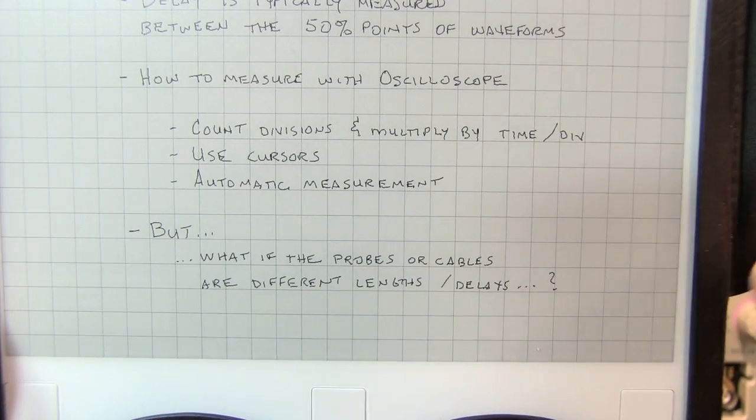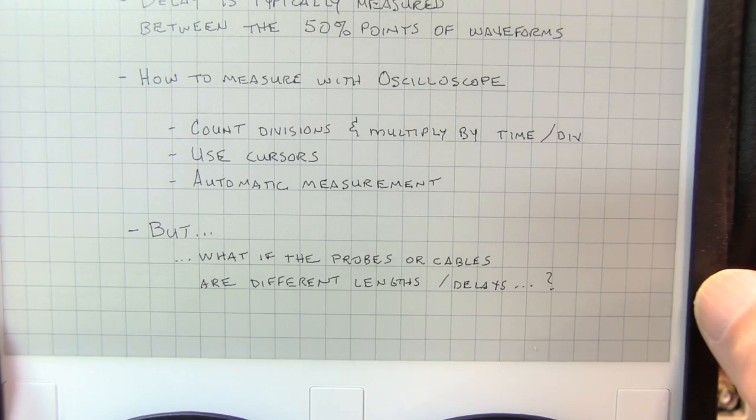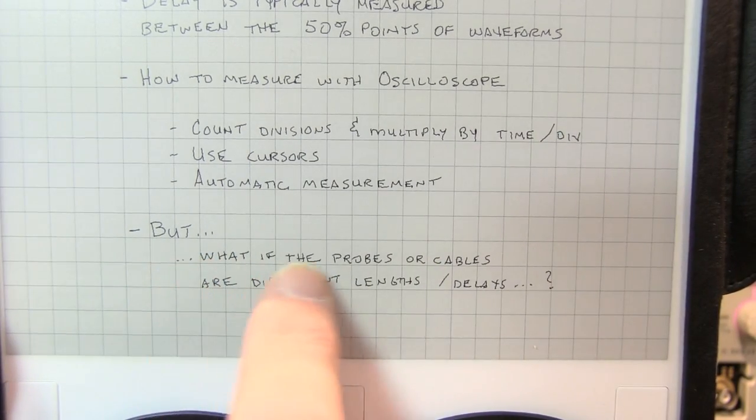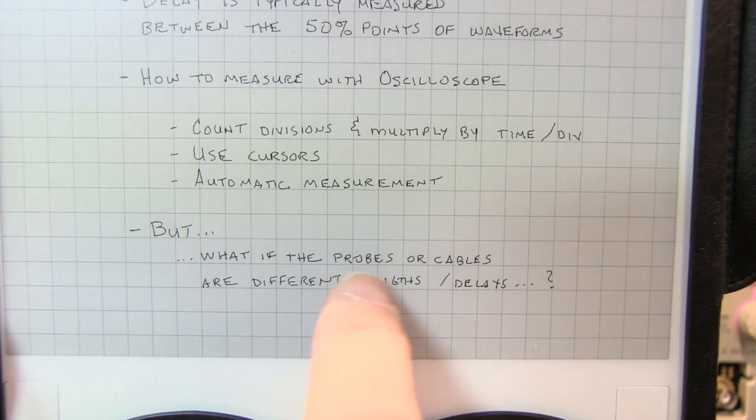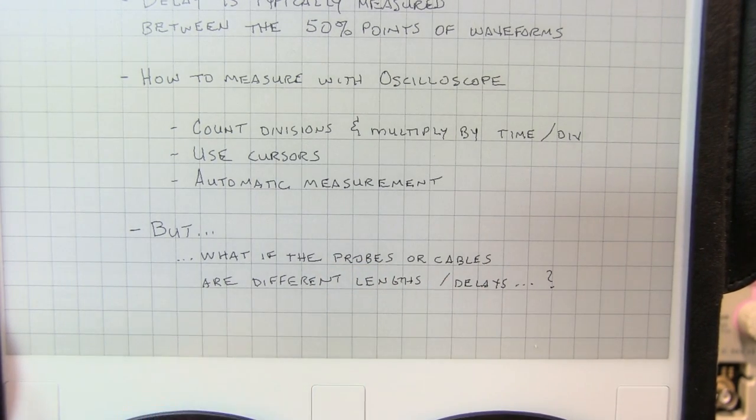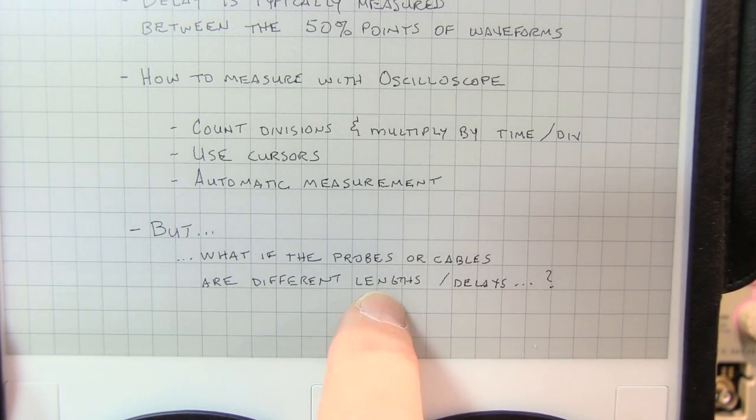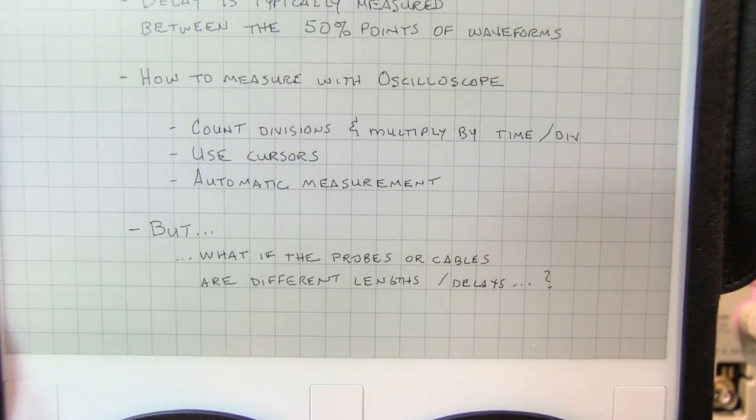Well these measurements, including the automatic measurement, all work perfectly well. But, what happens if the probes that we're using to connect up to those signals, or the cables that we're using to connect those signals to our scope, are of different length or different delays? That's certainly going to affect our measurement.